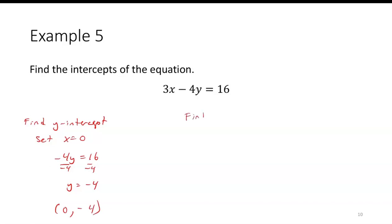To find the x-intercept, set y equal to 0, which gives us 3x equals 16. Dividing by 3, we get x equals 16 over 3. As an ordered pair, that's 16/3 comma 0.